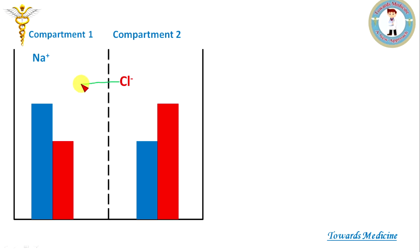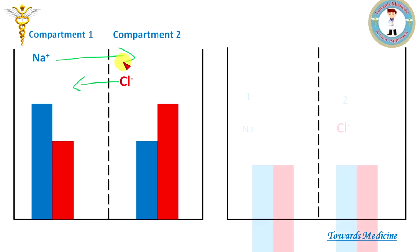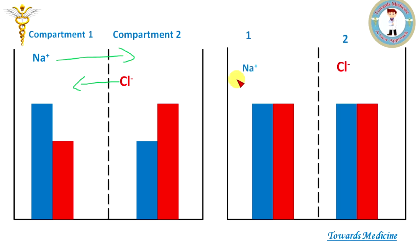Chlorine from compartment 2 will diffuse to compartment 1, and sodium from compartment 1 will diffuse to compartment 2, until a stage is reached when the concentration of sodium and chlorine in both compartments becomes equal. This is what happens in the case of simple diffusion.